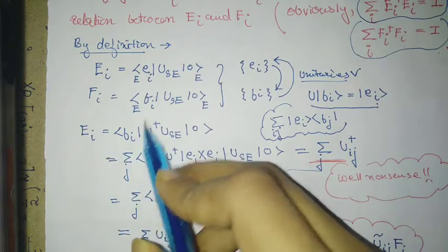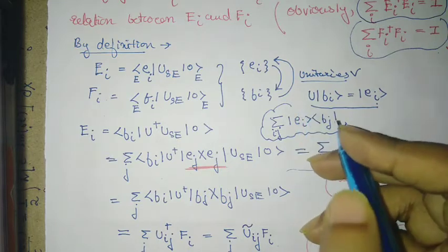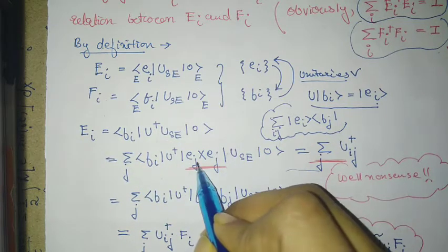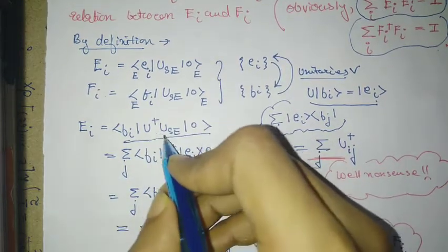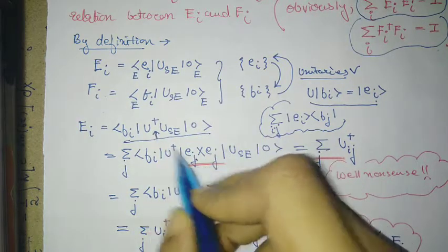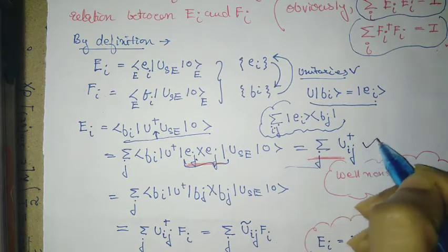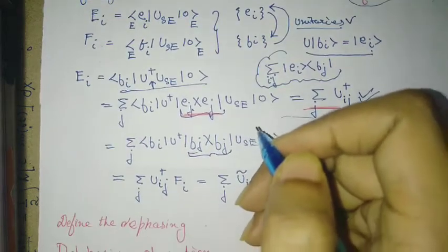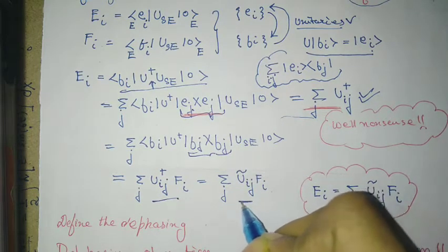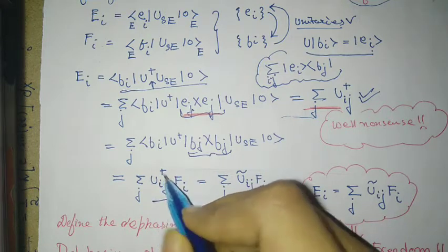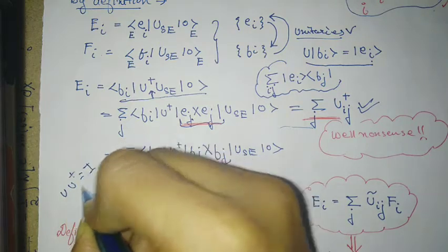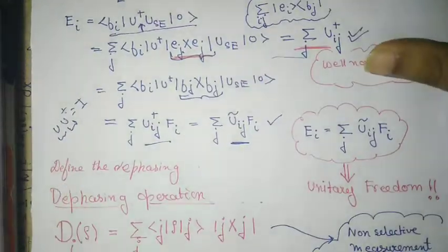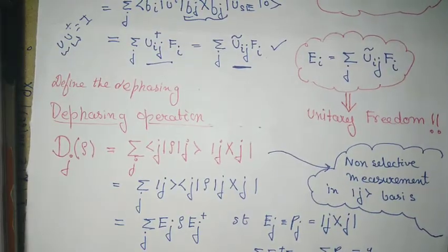Then Eᵢ can be written by substituting using the dual basis. From here, the next important step is introducing an orthonormal set of bases f — introducing this basis brings us from one expression to the next. The final result is obtained where I rename u_ij† as u, since u† is also unitary and u can also be said to be unitary. This means the Kraus operators are unitarily connected to each other. Now let's quickly discuss one more operation: this is called the dephasing operation.